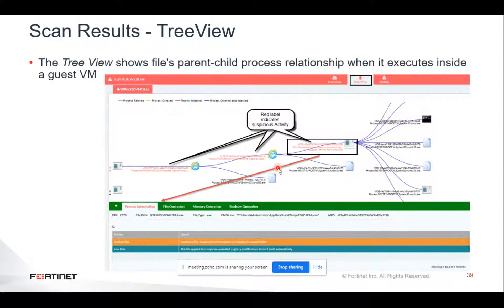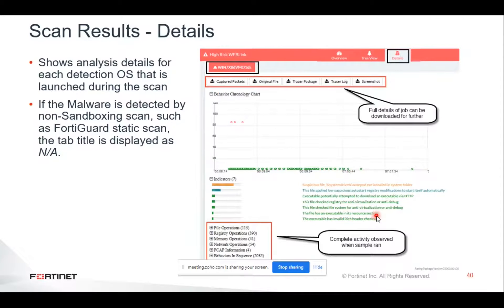If there is any suspicious activity within a tree node, it is labeled in red. Nodes shown in black are not suspicious. This is the way you can visually identify what the detailed analysis was showing. The detail tab shows analysis detail for each detection, including the OS launched during the scan — for example, Windows 7 x86, the VM which was launched to execute the file. FortiSandbox might launch multiple VMs, and you will have multiple VM or OS tabs. This is how you get all the information about a specific file in the detail logs.